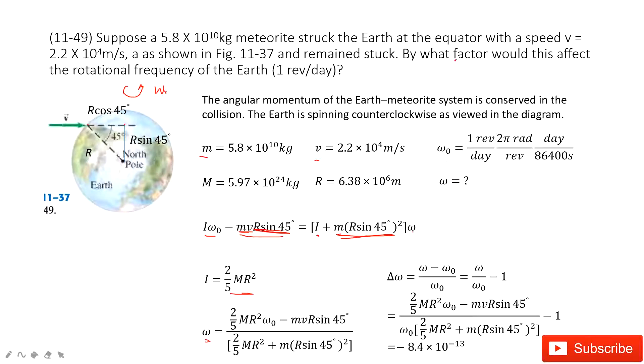Now we need to find what factor does it affect. So we can find the percentage error. So delta omega. Use omega minus omega naught over omega naught. So you can input the omega inside, input the quantities, you get the final answer.